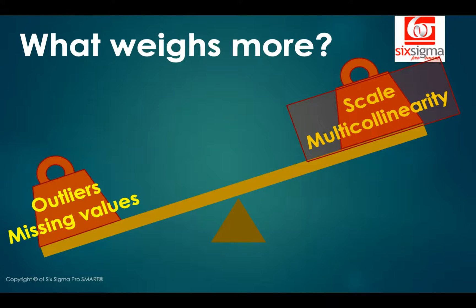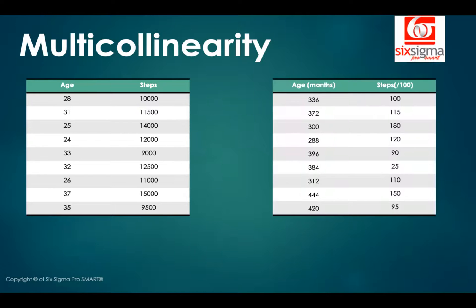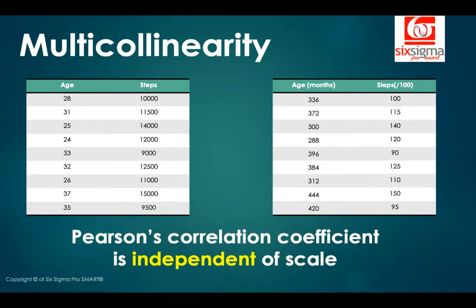But between these two, which should be given precedence? Let's understand that. Let me show you a data which we discussed in the last video. Here, we are talking about the age of the participants and the number of steps walked by each of them on an average. And we could transform this data from age in years to age in months and steps to per 100. Age in months looks very different from the age in years because we've multiplied every value by 12. And we've divided every single value in the steps column by 100 to bring it to per 100 steps. However, the interesting fact is the correlation between these two variables for both the tables will be identical.